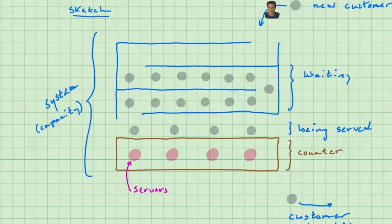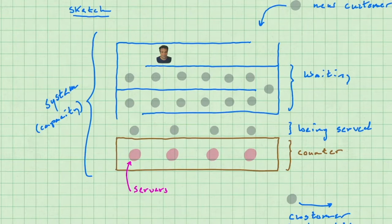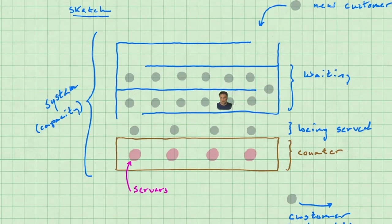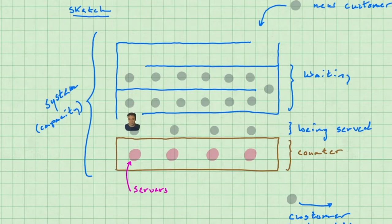If you've ever heard the message 'we're currently experiencing higher than expected call volume' and wondered to yourself 'I don't know if that means what you think it means,' this lecture might be for you. We're going to talk about queuing systems, which are models used to describe people waiting in line or other similar constructs that don't have to involve people at all.